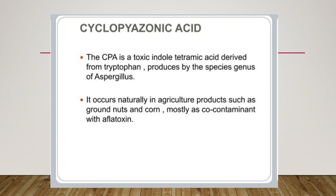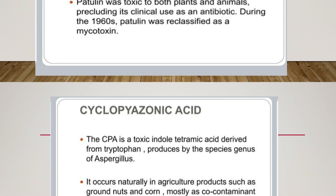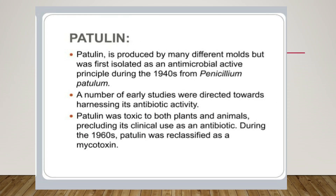Cyclopiazonic acid is a toxic indol-tetranic acid derived from a fungus. It is produced by species of the genus Aspergillus and occurs naturally in agricultural products such as groundnuts and corn, mostly as a co-contaminant with aflatoxins.